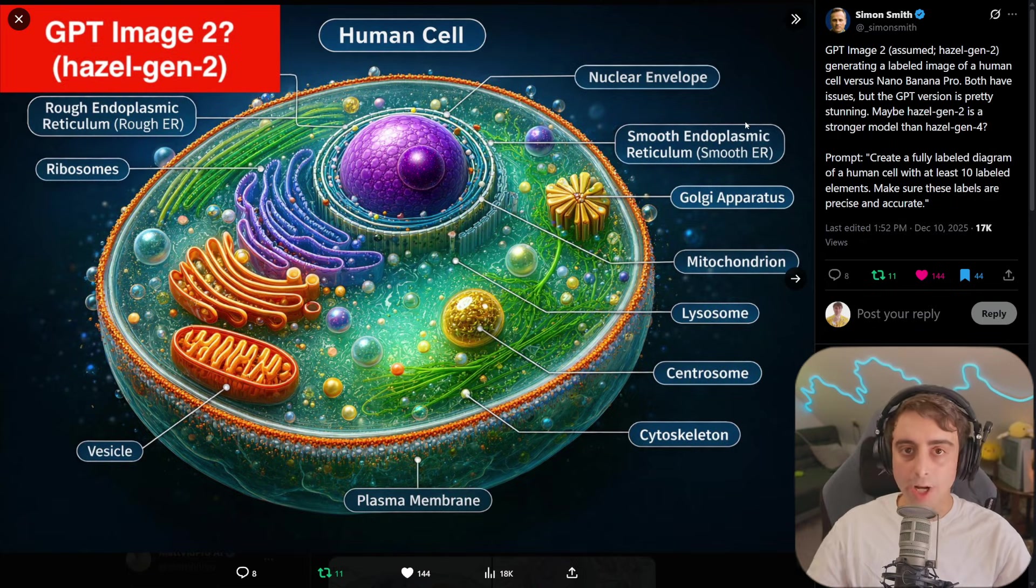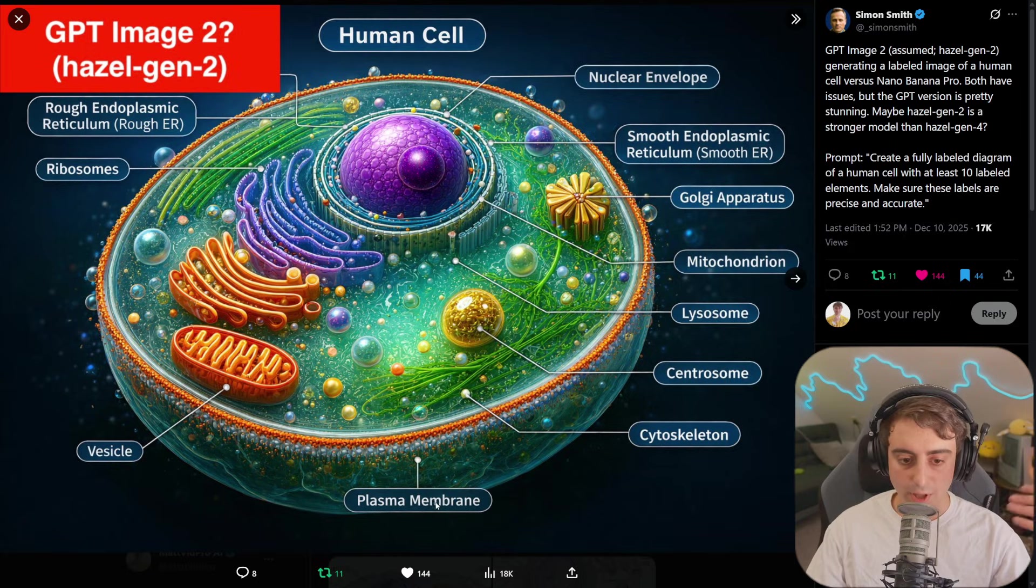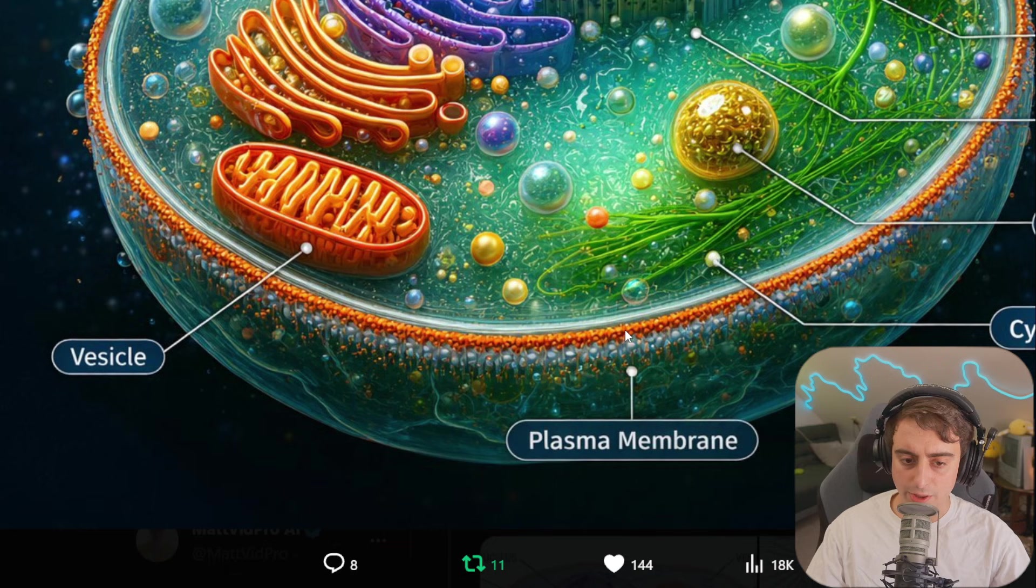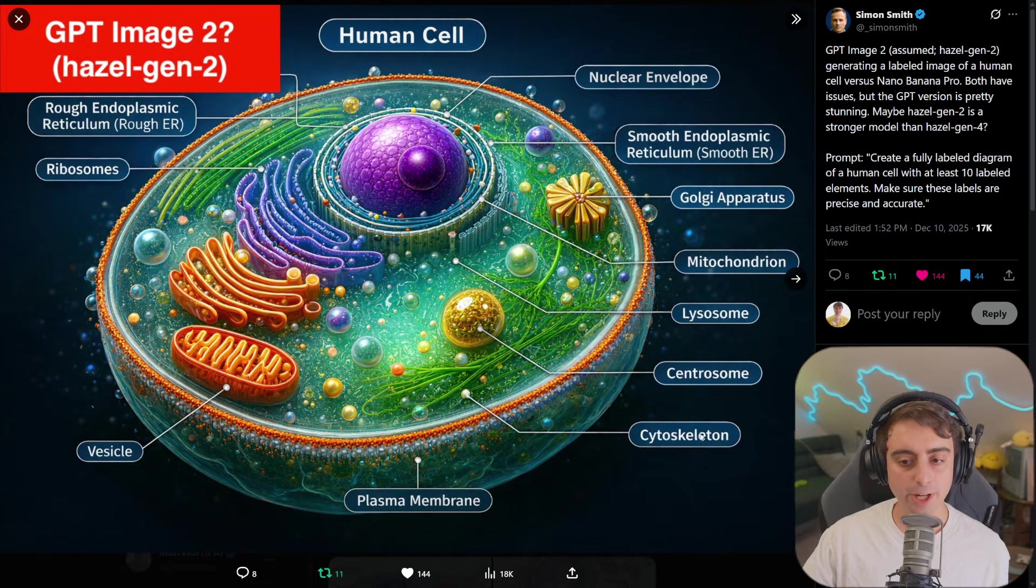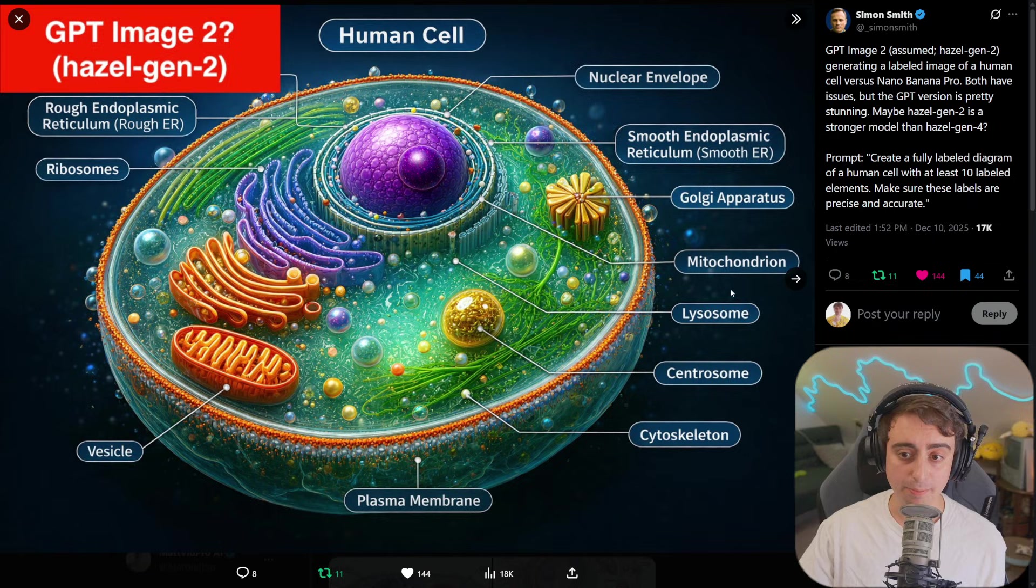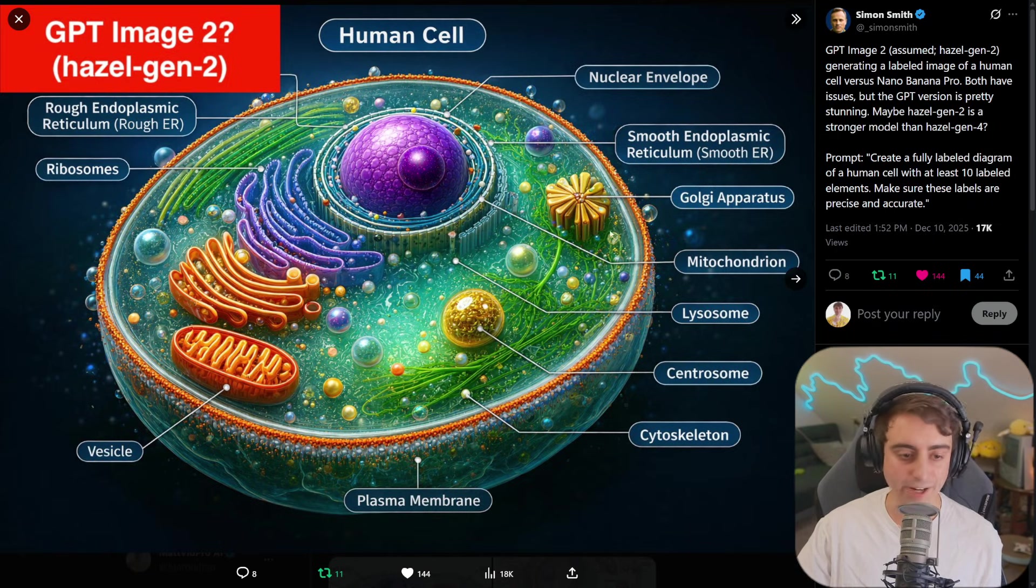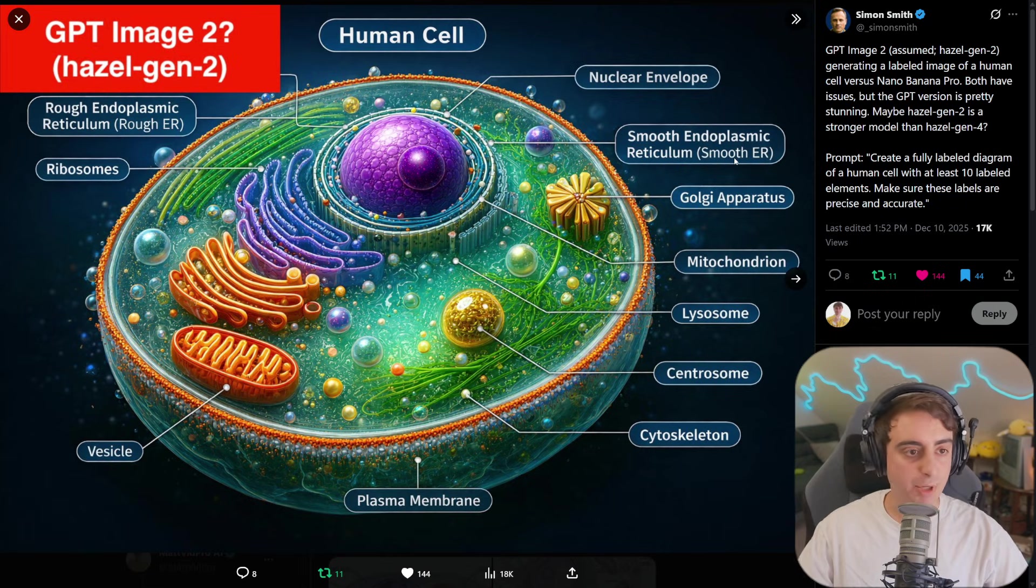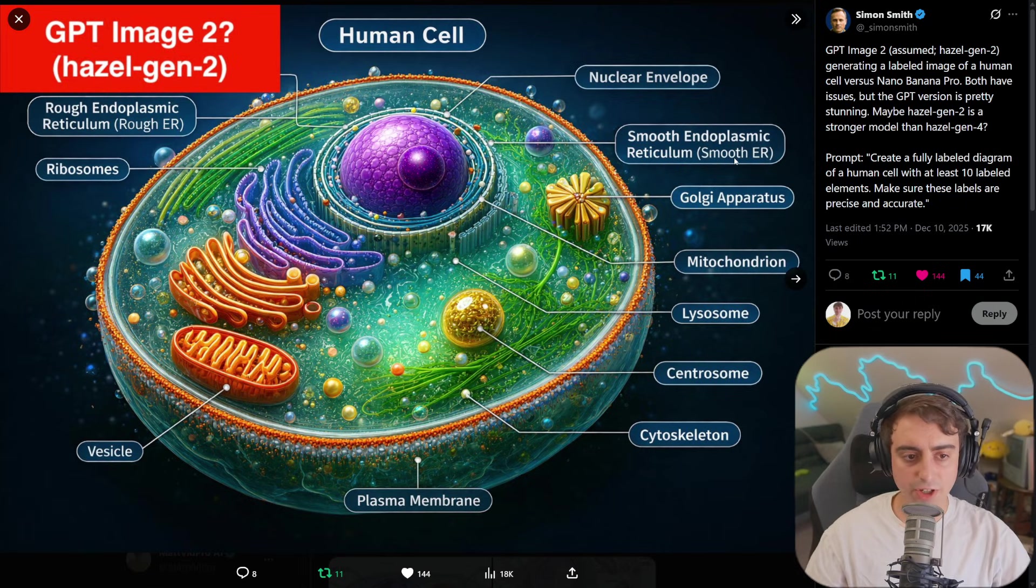First of all, there's quite a bit that it got right. Obviously, human cell spelled accurately at the top. Plasma membrane pointing directly here. And I think the detail on this plasma membrane is very good. We've got cytoskeleton, centrosome, lysosome, mitochondrion, Golgi apparatus, vesicle, ribosomes, smooth and rough endoplasmic reticulum. I think the text here is good.